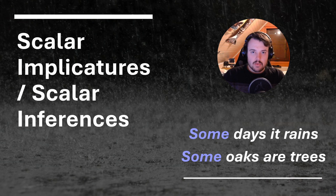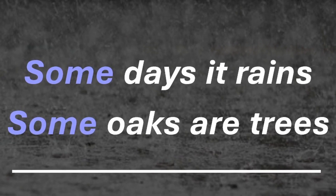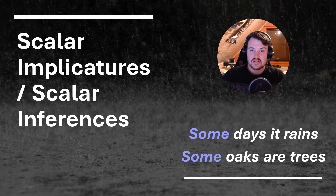The sentences we will use to explain the phenomenon are displayed below. You can say 'some days it rains.' That's quite a clear sentence. A lot of people will assume that's true — some days it rains — and they'll assume that because not all days are rainy. The other sentence: 'Some oaks are trees.' That's a bit more of a difficult one, isn't it?